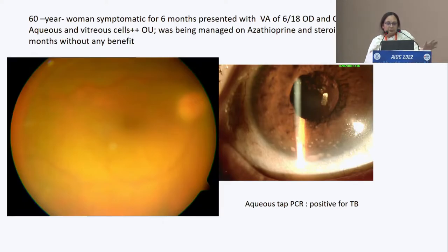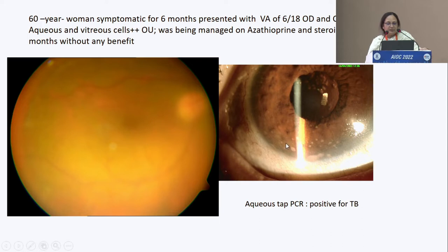This is a 60-year-old woman who was symptomatic for six months. Vision was 6/18 in the right eye and counting fingers in the left. She had aqueous and vitreous cells in both eyes and was being managed on azathioprine and steroids with not much difference. You can see multiple granulomatous KPs, inflammation, and vitreitis.